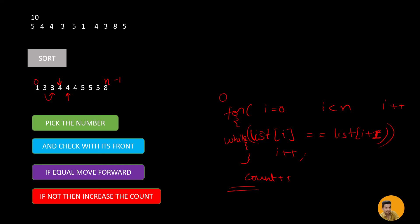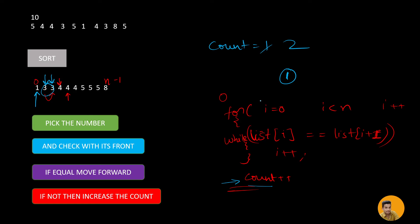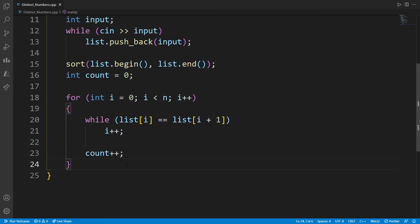Let me do a dry run. Starting at i=0 with the blue pen — we check if it equals i+1, no it's not equal, so we increase count to 1. Move to the next element, check its front — they are equal, so i increments. Now we check again: 3 equals 4? No, so we increase the count. For each distinct block there is just a single count. This is a simple problem and I hope it's clear.